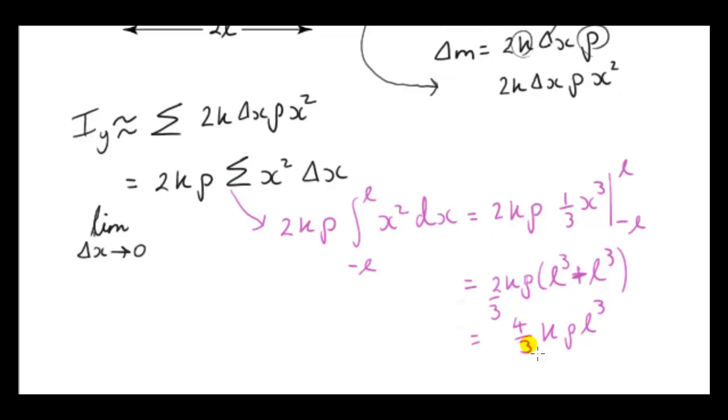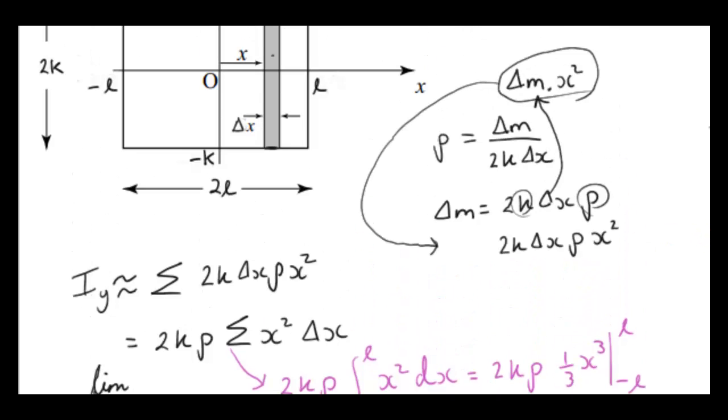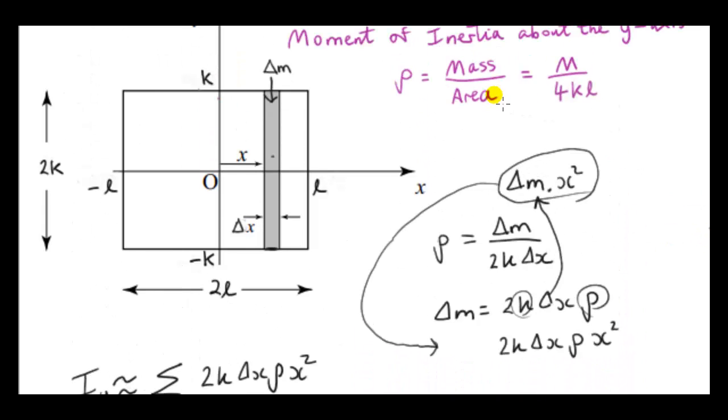Now, normally we give a moment of inertia in terms of the entire mass of the object. So we don't want it in terms of the mass per unit area rho. We want to replace rho. To do that, we just go back up here. Rho is just M over 4KL, the total mass divided by the total area of the rectangle.